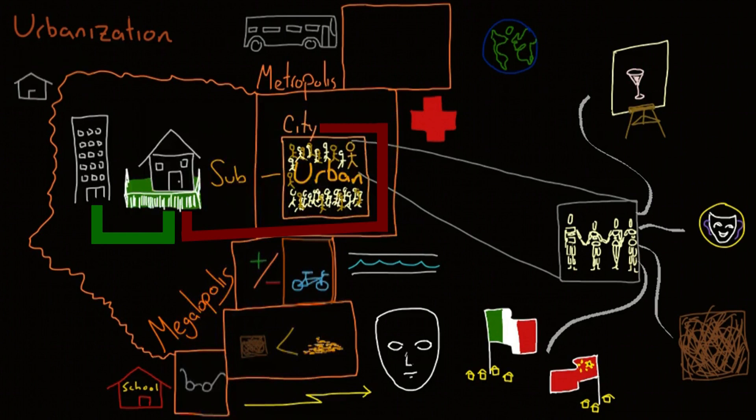Even beyond the suburbs can be areas known as exurbs. Areas like the Woodlands near Houston, Texas, or Rochester outside of Detroit. These are often very prosperous areas outside the city where people live, and then commute into the city for work, similar to suburbs.